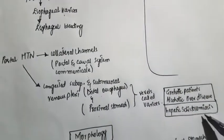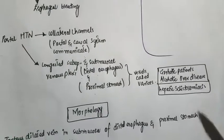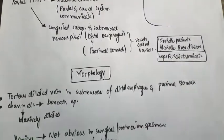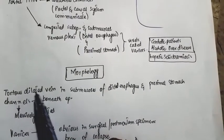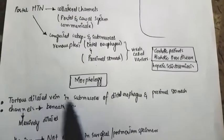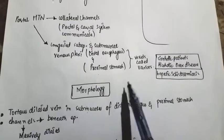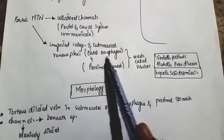In morphology, the varices are mainly composed of tortuous dilated veins in the submucosa of the distal esophagus and proximal stomach, as I discussed earlier.